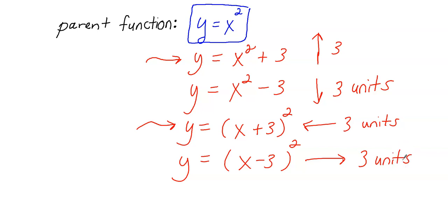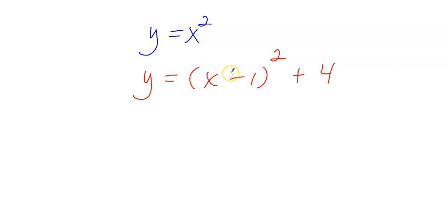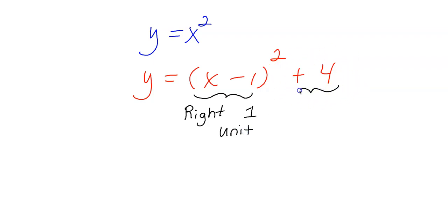Let's look at one more situation. Say I had the parent function y equals x squared and a new equation y equals the quantity x minus 1 squared, plus 4. How would you describe the transformations? The x minus 1 moves everything to the right 1 unit, and the plus 4 at the end moves everything up 4 units. So in this situation there are 2 transformations occurring. I hope this was helpful — have a great day.